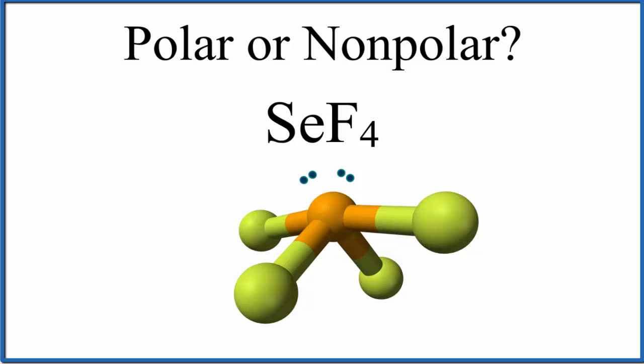So the selenium that's in the center, if we look up the electronegativity for selenium, that's 2.55. Then each of these fluorine atoms here, 3.98. So this bond right here, we have a pretty big difference in electronegativity.